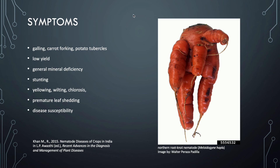The symptoms of this feeding behaviour of Meloidogyne on its host plants include galling, carrot forking as seen on the right, potato tubercles forming, and various types of root system dysmorphia. This is also associated with low yields, general mineral deficiency within the plant, stunting of plant growth, yellowing, wilting, chlorosis of the leaves, premature leaf shedding, and increased disease susceptibility. Plants become more susceptible to fungi, bacteria and viruses, overall causing yield reduction.